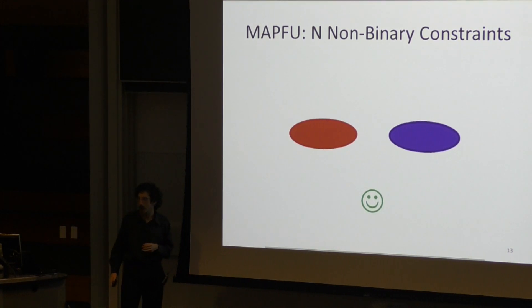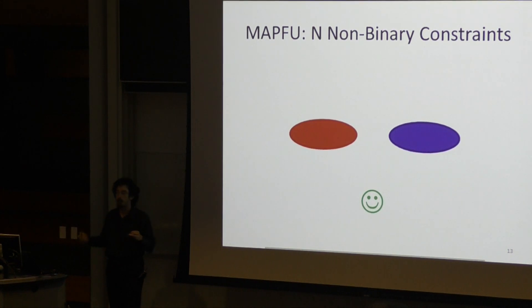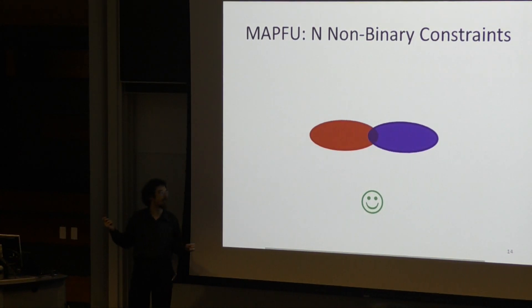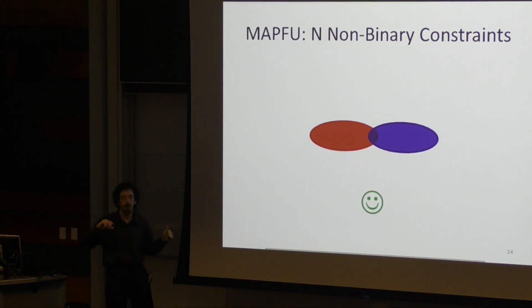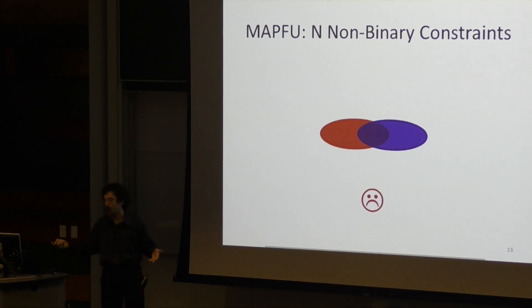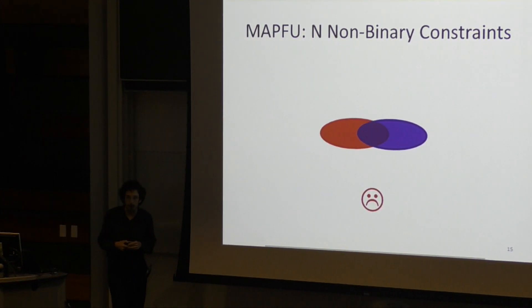What this means is now, instead of having inseparable binary constraints, we have inseparable non-binary constraints, because you have only a little failure, not enough to trigger a constraint violation, but enough that if you do this several times, you will eventually cause a constraint violation.